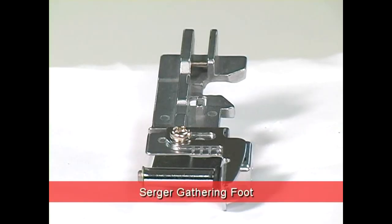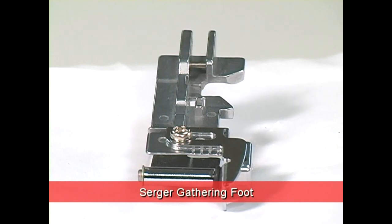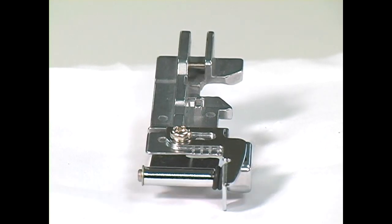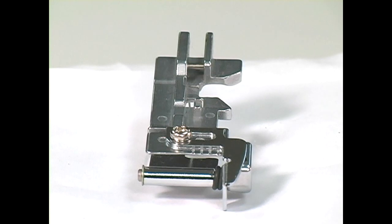The serger gathering foot quickly and accurately gathers fabrics utilizing a basic 4 thread overlock stitch with increased stitch length and differential feed settings. The fabric edge is cut, finished, and gathered evenly with one pass through the serger.